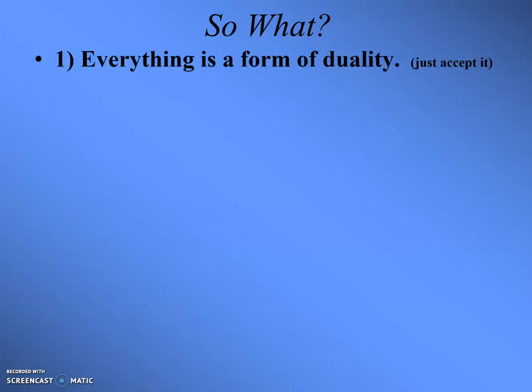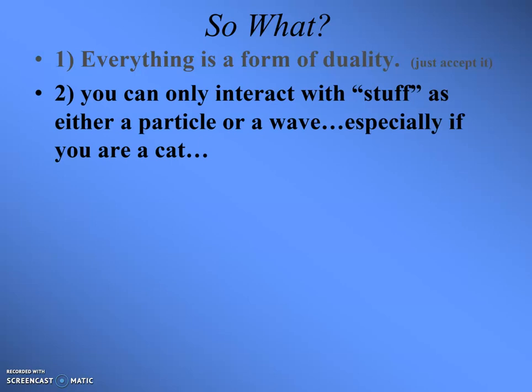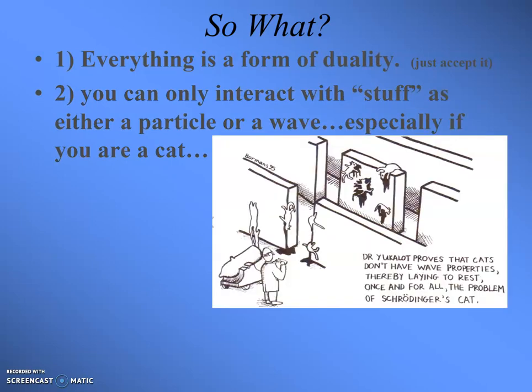Everything is a form of duality — that's just the way it is, there's no way to get around it. I remember being at university learning this stuff and some people had a hard time accepting it because it was so strange. You can interact with stuff as either a particle or a wave — especially if you're a cat, that's the old Schrödinger's cat joke. And if you're into physics and Schrödinger's cat type stuff, this cartoon is hilarious.